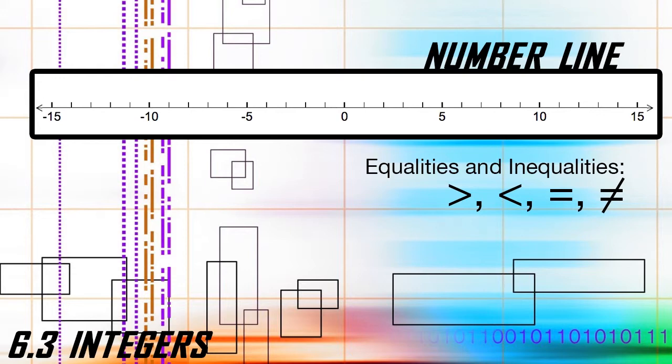Let's take a look at a few problems. Number one: the absolute value of negative six compared to six. Step one, plot them on a number line. Step two, the absolute value of negative six is six units away from zero, and six is also six units away from zero. Step three, fill in the appropriate sign — in this case, the equal sign.